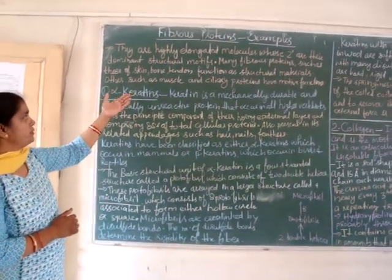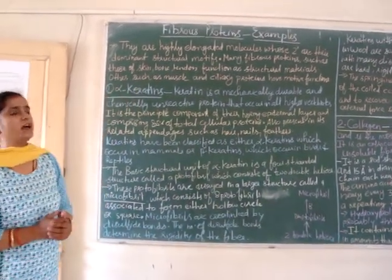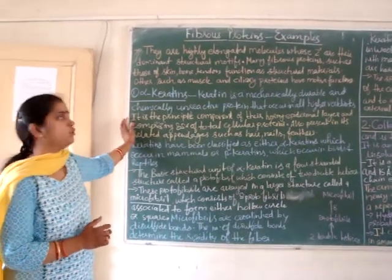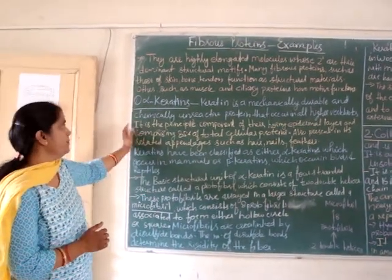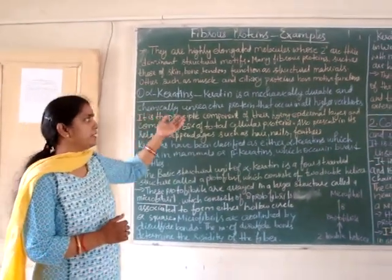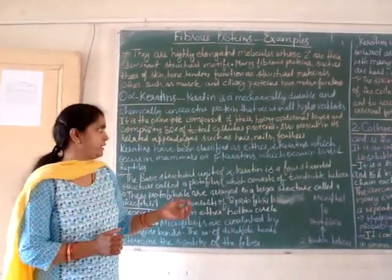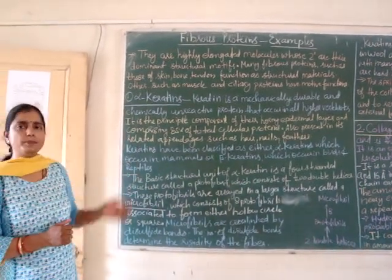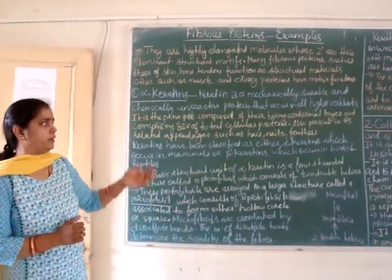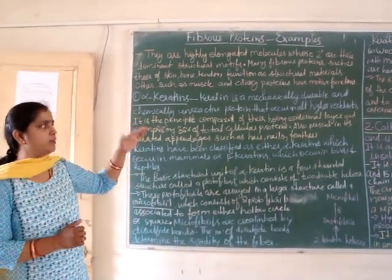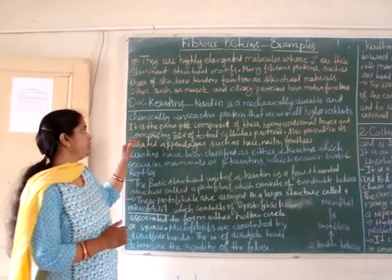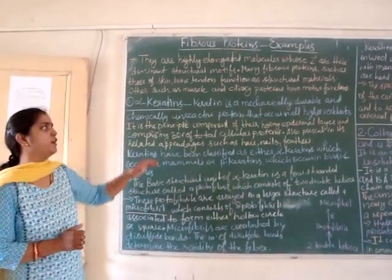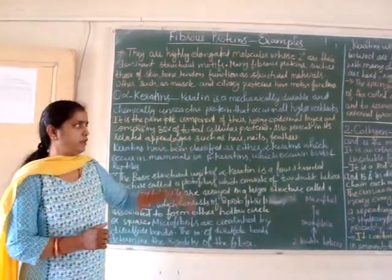First of all we will see the example of fibrous protein that is alpha keratin. Keratin is a mechanically durable and chemically unreactive protein that occurs in higher animals. It is the principal component of their horny epidermal layer, comprising 85% of total cellular proteins.